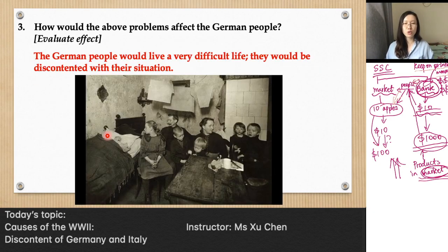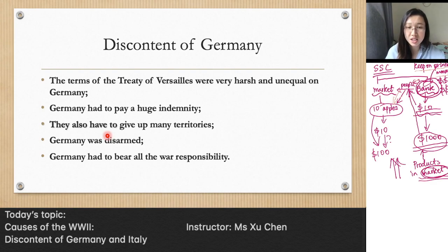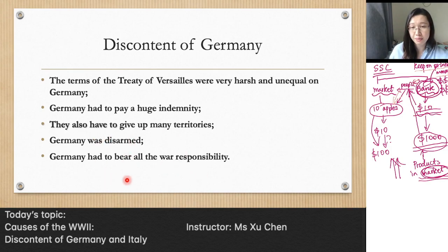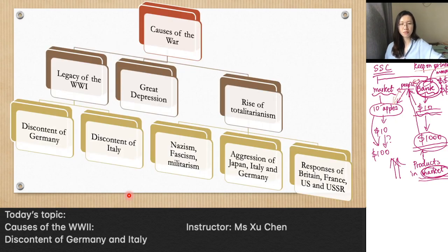To summarize why German people were so discontent: the Treaty of Versailles terms were very harsh and unequal — they had to pay huge reparations, give up many territories (and thus resources, labor force), were disarmed, and had to bear all war responsibility. Additionally, the German government's decision to keep printing money created a self-made crisis called hyperinflation, which worsened the economic condition considerably.